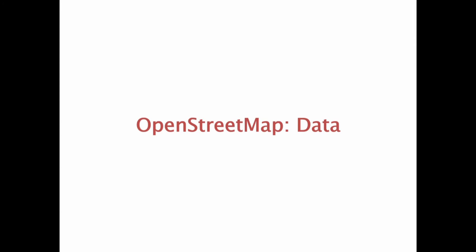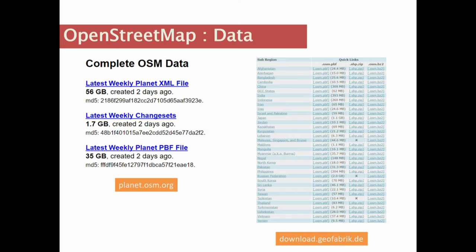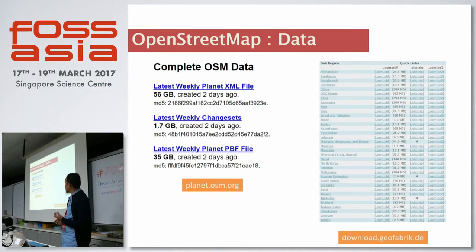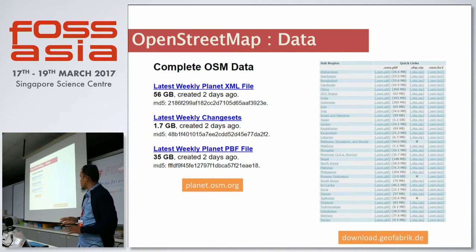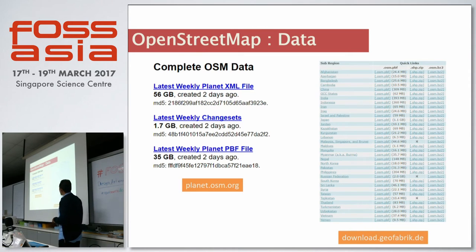So how about the OpenStreetMap data? The whole planet data is only 56 gigabytes — I just updated these slides this week, so it's current. By downloading those 56 gigabytes, you get the whole planet XML data. Every week the data gets updated; the weekly changeset size is about 1.7 gigabytes. There's also the compressed PBF format — PBF stands for proto-buffer format, which compresses the data significantly. This is the overview of OpenStreetMap data for Asia — you can download country-level or city-level data.